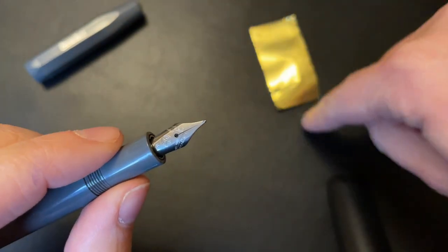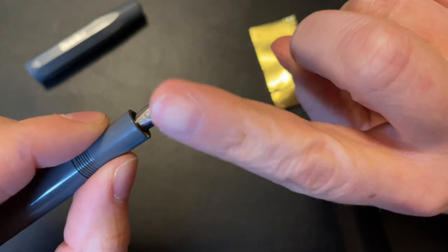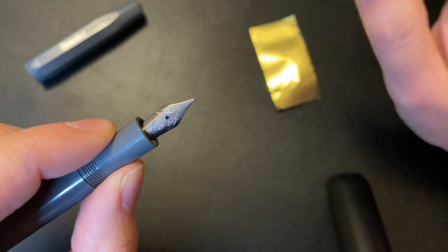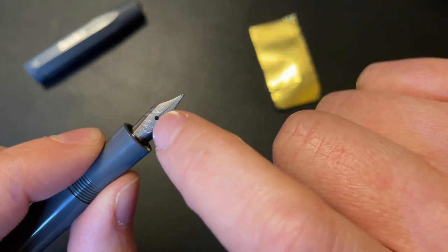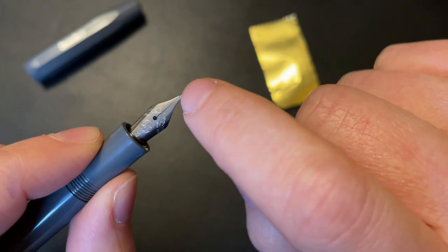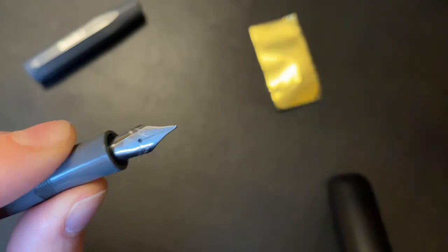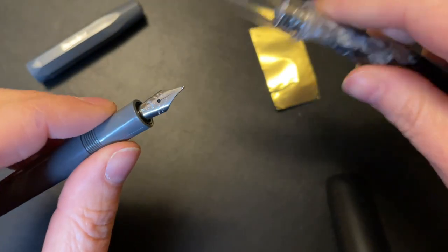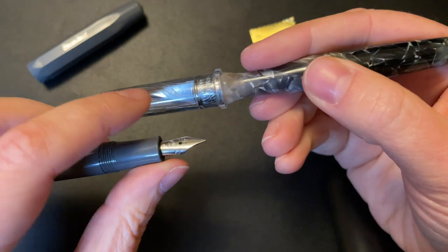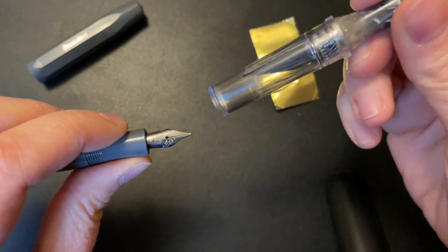Absolutely worst case scenario, and please only do this if you can replace the nib and feed if worst case scenario you break it, but you can also widen the slit on the feed and that will increase the flow. But please do that carefully. You would do that by taking out the nib and feed and then getting something like an exacto knife and literally cutting a slit down that feed.